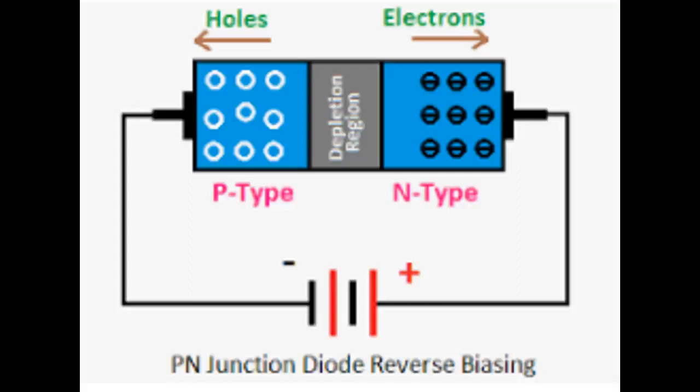When a P-N junction is formed, depending on the polarization of the voltage source, there are two possible outcomes. When the positive pole is connected to the N-type semiconductor and the negative pole is connected to the P-type semiconductor, the holes and free electrons move away, preventing the generation of an electric current. This is referred to as reverse polarization.